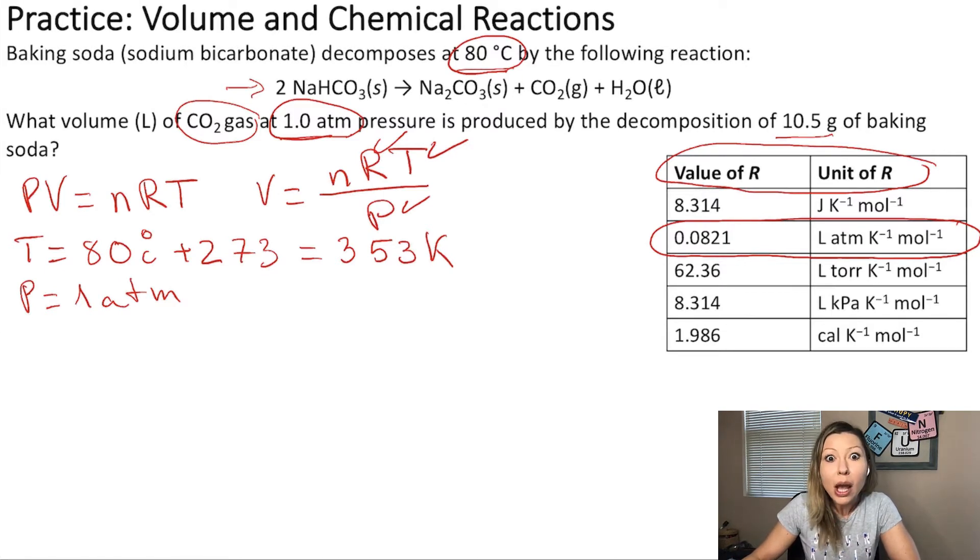What else is there? Well, we are missing the number of moles, right? So, we have to figure out the number of moles of carbon dioxide gas produced. How can we do that? Well, let's use reaction stoichiometry. Because the grams of baking soda is given to us, we can calculate the moles of baking soda and use the equation to figure out the moles of carbon dioxide gas.